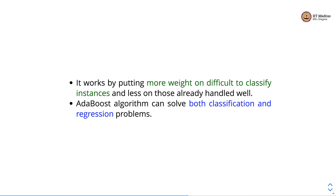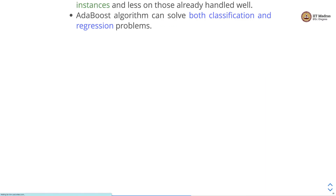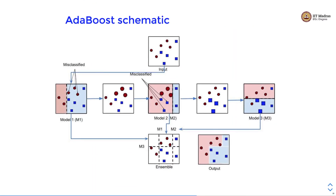AdaBoost algorithm can solve both classification and regression problems. Let's understand AdaBoost through a schematic. Let's say this is our input data — it has two classes, the squares and the circles. The first model is able to separate the circles from the squares, and there are three misclassified points.